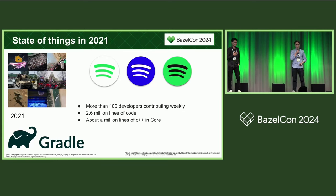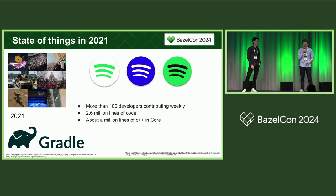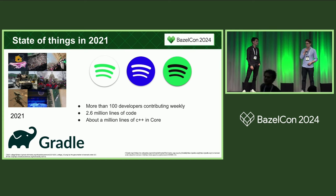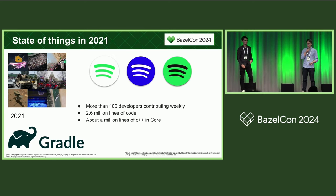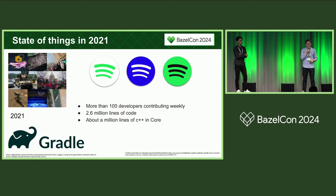Back in 2021, we had a bunch of apps on the Google Play Store: Spotify Lite for lower-powered devices, Spotify for Artists, and of course the Spotify Music app. We had about 100 developers contributing weekly and 2.6 million lines of code in our Android monorepo hosting all of these applications. We also had a C++ repository called Core with about a million lines of code, and all of this Android code was built using Gradle.